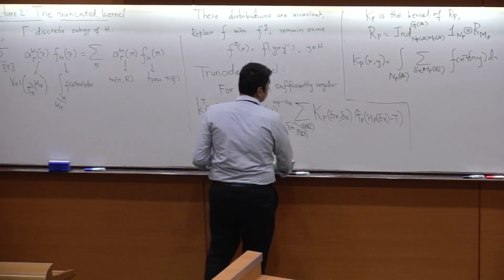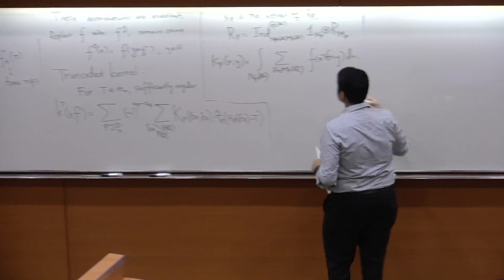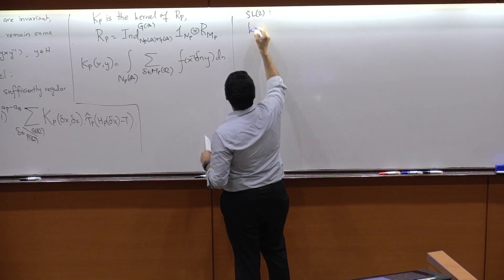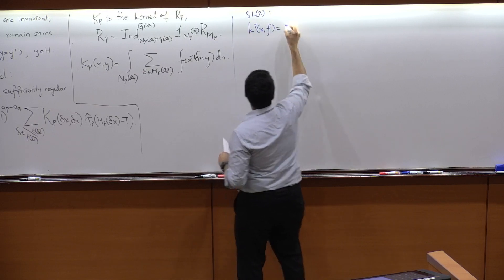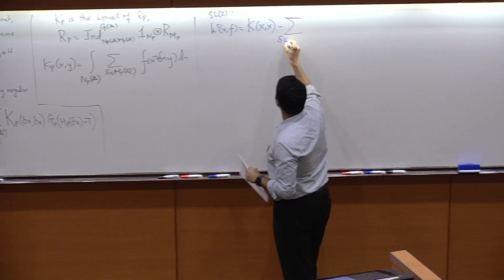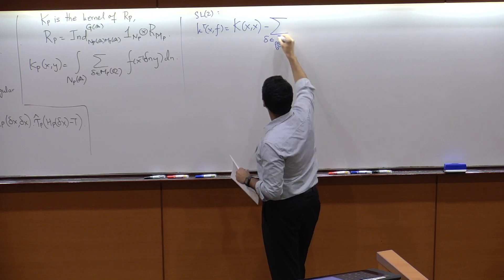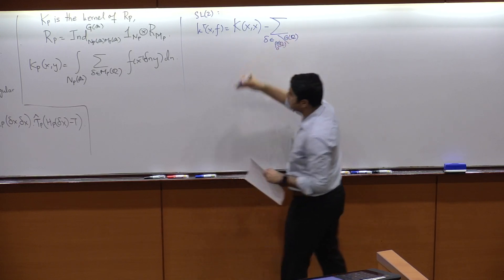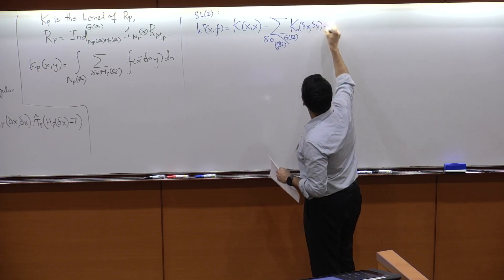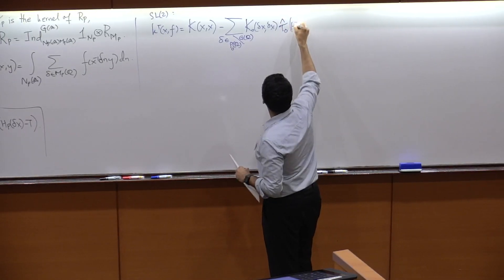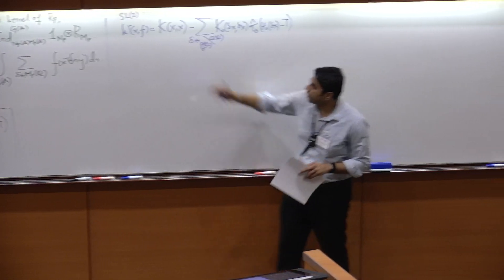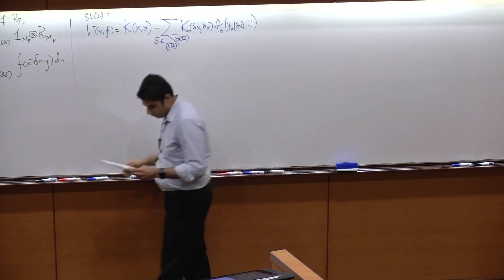In the case of SL₂, you have two standard parabolics, so K_T(x, F) equals K(x, x) minus one term: a sum over δ in G_Q mod P₀_Q of K_{P₀}(δx, δx) times τ̂₀(H₀(δx) − T). So it's a difference — you're subtracting something from K. That's the definition.